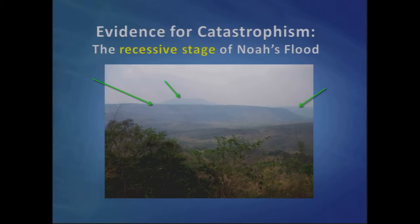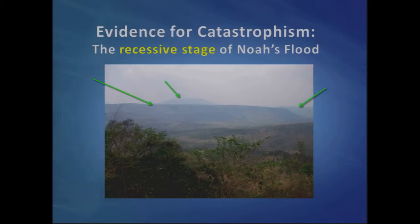High-speed water currents moving over very wide areas, carrying rocks of many sizes, planing surfaces flat, and gradually as water lowered, planing surfaces flat at lower elevations and moving from high altitudes towards sea level. That's exactly what we see today. Present-day erosion is too fast for planation surfaces to be tens of millions of years old, but they're great evidence for the flood.